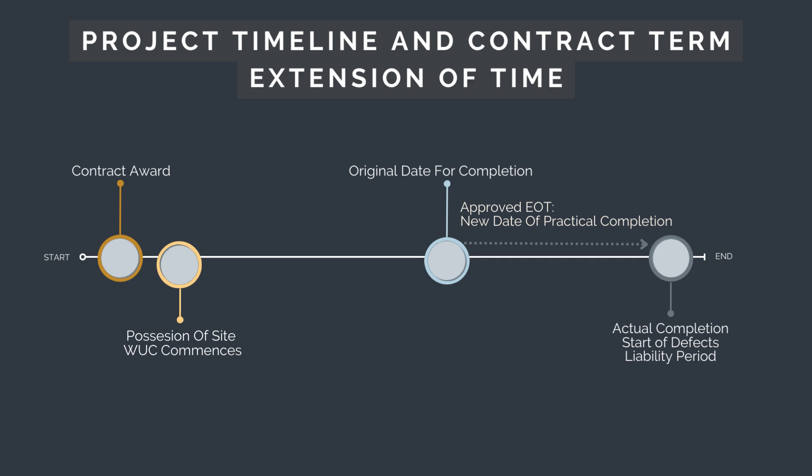There is now a new date for practical completion, which is the original date for practical completion plus the approved extension of time claim. Say the EOT was for three months — the new date for practical completion is 1st of September. This new date for practical completion will also be the start of the defects liability period.